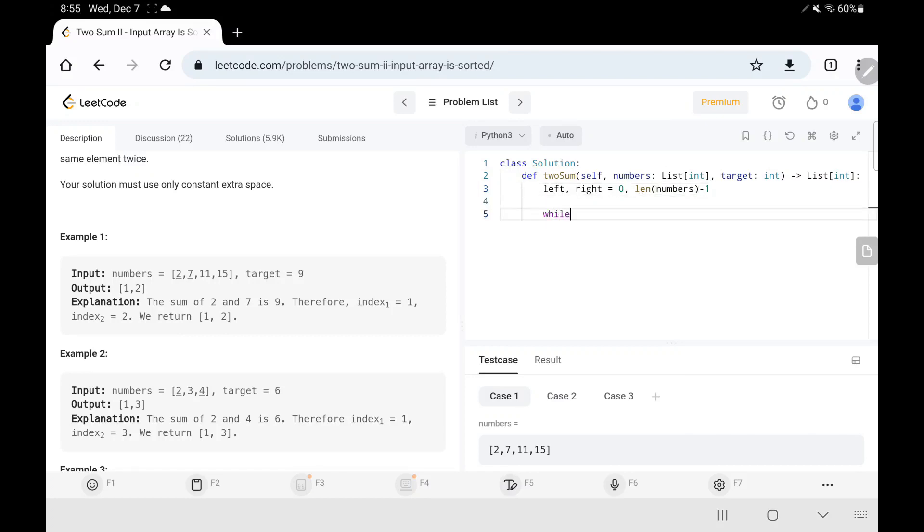Now we are going to take our while loop and we are going to check if left is less than right or not. Then we will take s as the sum variable where we will be summing the left pointer element and the right pointer element.